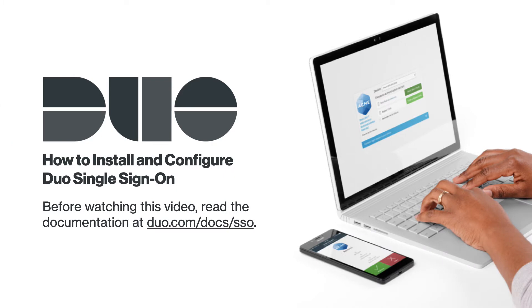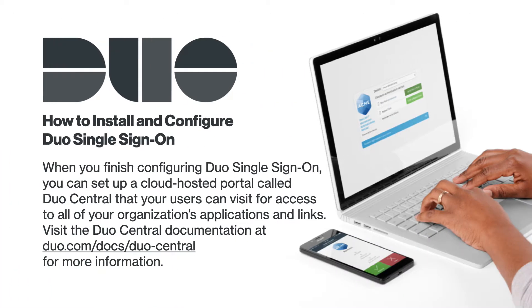Before watching this video, please be sure to read the documentation for Duo Single Sign-On at duo.com/docs/sso. When you finish configuring Duo Single Sign-On, you can set up a cloud-hosted portal called Duo Central that your users can visit to get access to all of your organization's applications and links. Visit the Duo Central documentation at duo.com/docs/duo-central for more information.